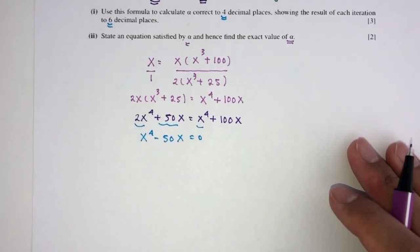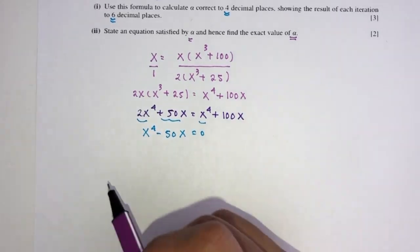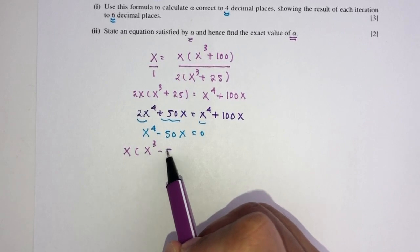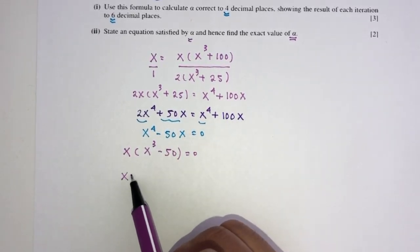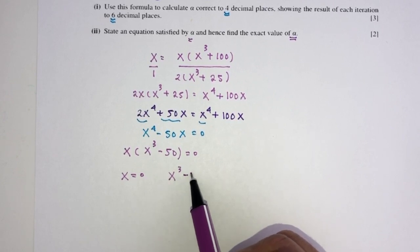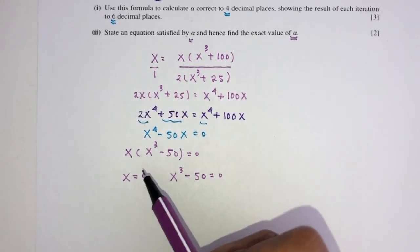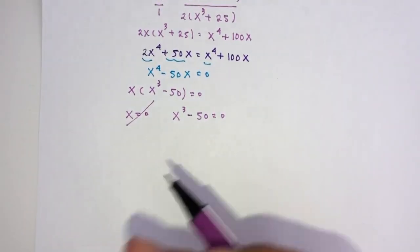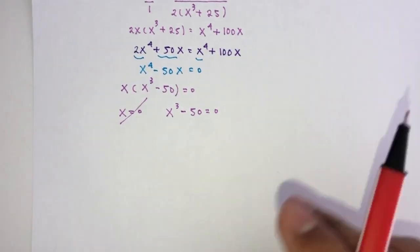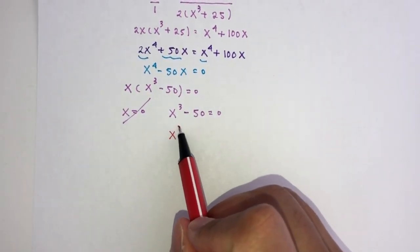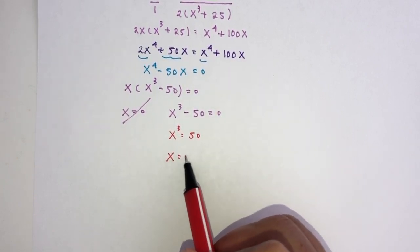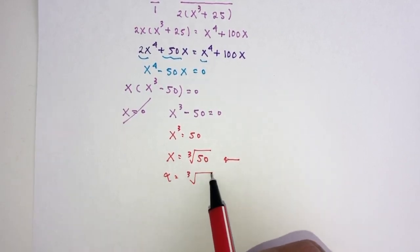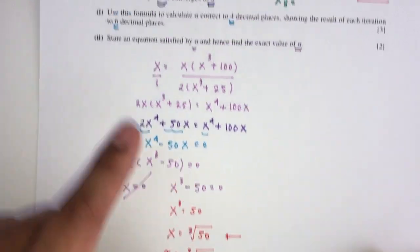Now we can factorize: x times (x cubed minus 50) equals 0. So x could be 0, or x cubed minus 50 equals 0. Since the initial value was 3.5, we don't use x equals 0. So x cubed equals 50, and the exact value of alpha is the cube root of 50. That is your answer for part 2 of question 2.